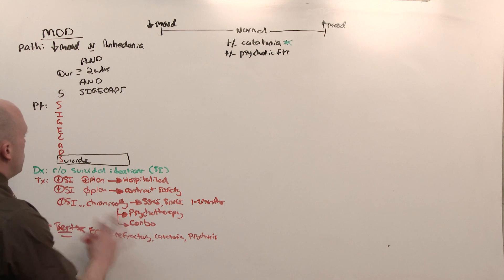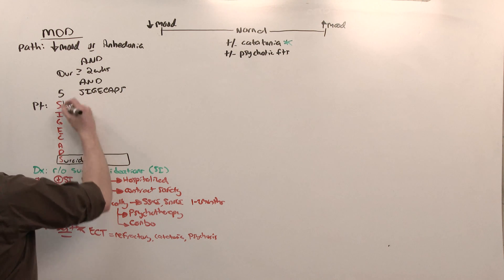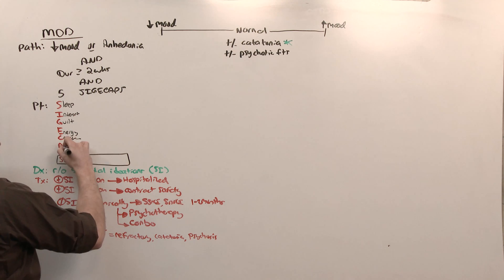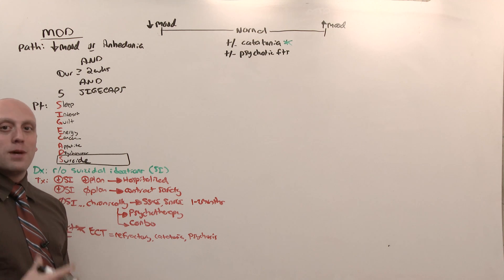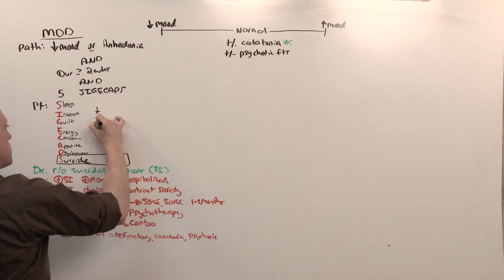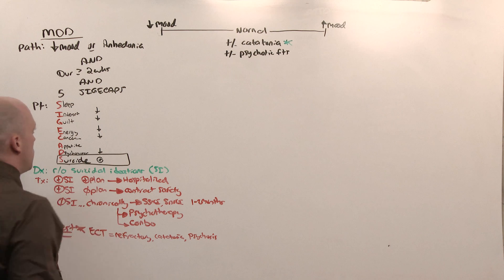But that's how you treat depression. Wait, what is SIGECAPS? How do I identify it? S is for sleep. I is for interest. G is for guilt. E is energy. C is concentration. A is appetite. P is psychomotor retardation. Typical depression, formerly called melancholic, has decreased interest, guilt, decreased energy, decreased concentration, and psychomotor retardation, and there may be suicidal ideations.